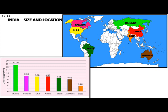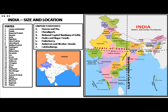India is 13 times bigger than the United Kingdom and nine times bigger than the size of Japan. India is the largest democracy in the world with a federal government. There are 29 states and seven union territories in India.